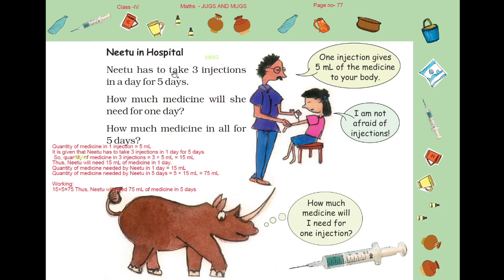Neetu has to take 3 injections in a day for 5 days. How much medicine will she need for 1 day? How much medicine in all for 5 days? One injection gives 5 ml of the medicine to your body. How much will she need for 1 day? One injection gives 5 ml of the medicine.